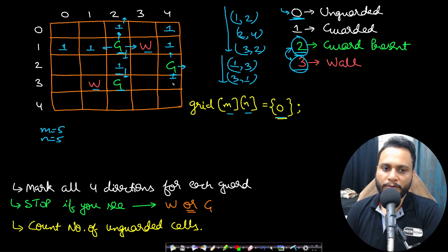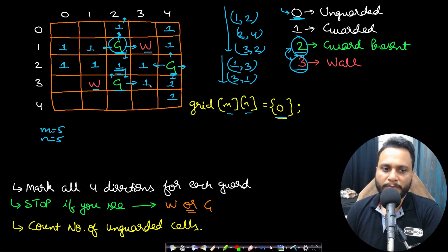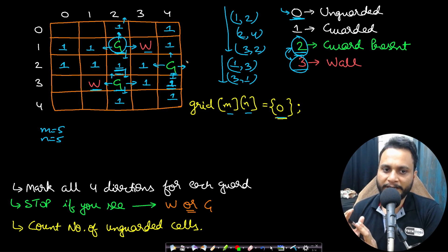For the third guard at (3,2): moving up marks cells until the guard at (1,2) obstructs the view; moving right marks cells (some already marked); moving down marks one more cell; moving left is blocked by a wall. After processing all guards in all four cardinal directions, we iterate over the entire grid and count cells still holding value 0 — those are the unguarded cells. Counting these zeros gives 7, so the answer is 7.